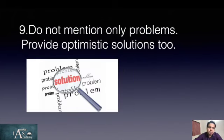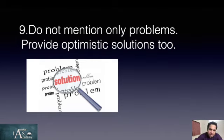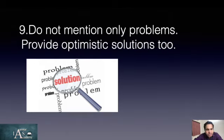You should not mention only problems — you should also provide optimistic solutions. If a solution is not within your grasp, at least write about possible committees established to provide solutions. For example, if the problem is about uniform civil code which could not be implemented till now, you can mention that the Law Commission of India was established to look into this matter and state the solutions provided by the Law Commission.